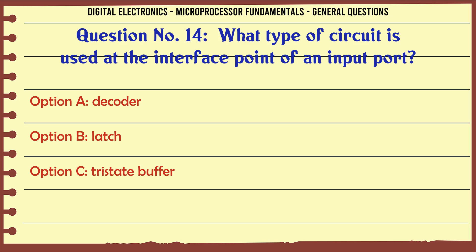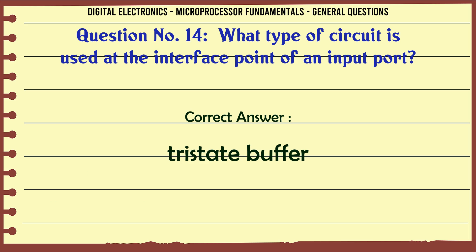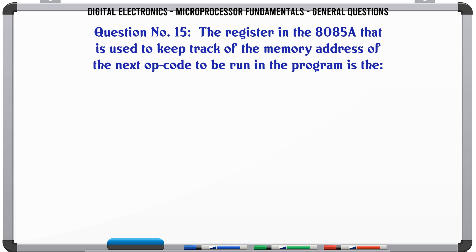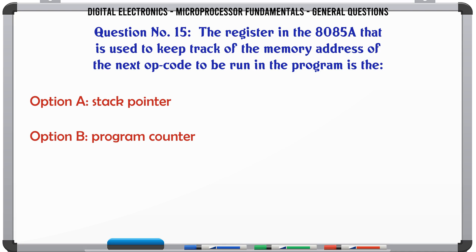What type of circuit is used at the interface point of an input port? A. Decoder, B. Latch, C. Tristate buffer, D. None of the above. The correct answer is Tristate buffer.